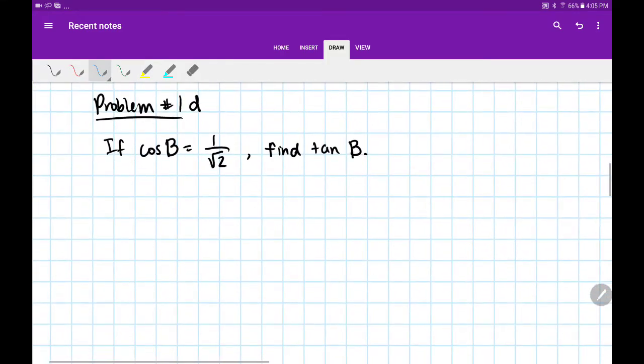Let's begin. Problem 1D says: if cos(B) = 1/√2, find tan(B). Our first step is always to label. Cosine has a formula, so this 1 is going to be x and this √2 is r, because cosine of any angle is x/r.